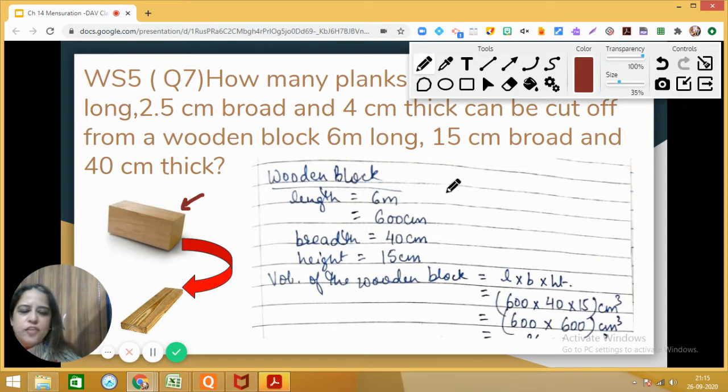So let us see what are the dimensions which are given. It's given that length is 6 meters, breadth is 40 centimeters, and height is 15 centimeters. My dear students, first of all we will be writing all the given dimensions in a single unit—the same unit, basically.